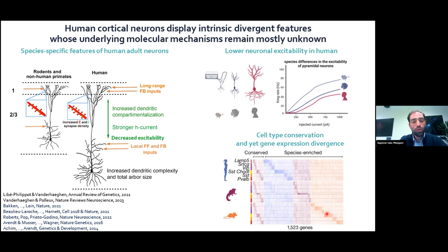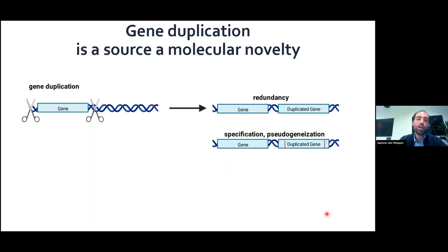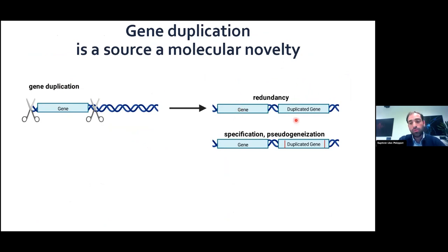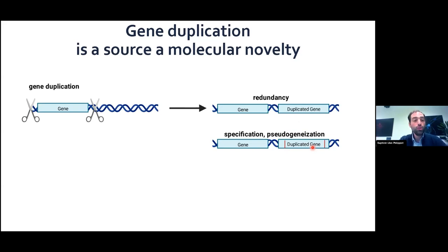These divergences in gene expression rely on the gene regulatory network evolution. But there's another source of molecular novelty: gene duplication. Gene duplication occurs when an ancestral gene shared between all mammals is duplicated in great apes or humans, leading to two genes — the ancestral one and a new gene. This can lead to redundancy, pseudogenization, or subfunctionalization, yielding duplicated genes with a new function in the human species.